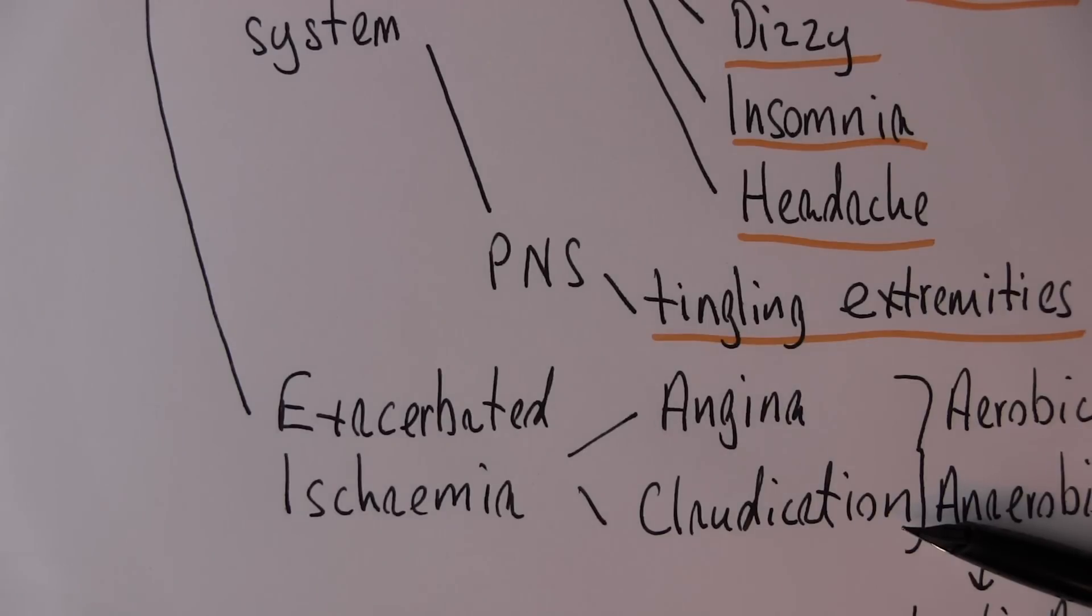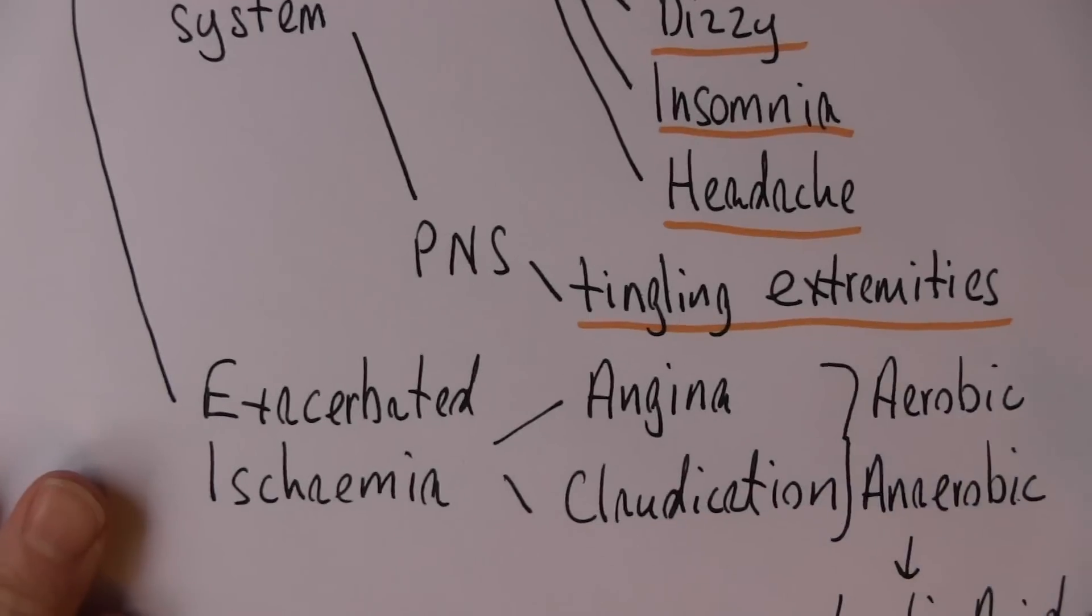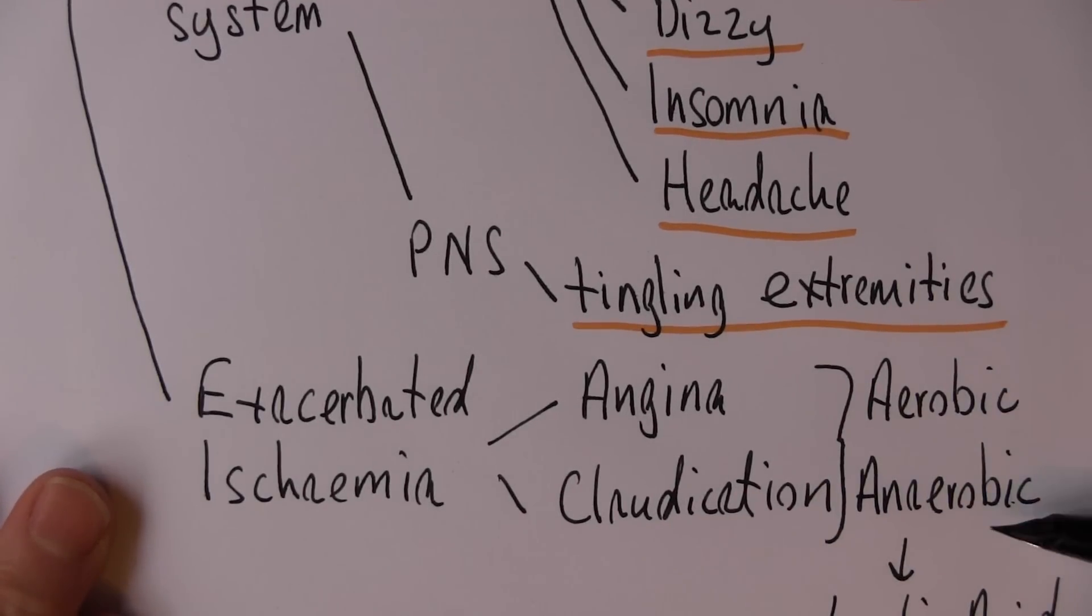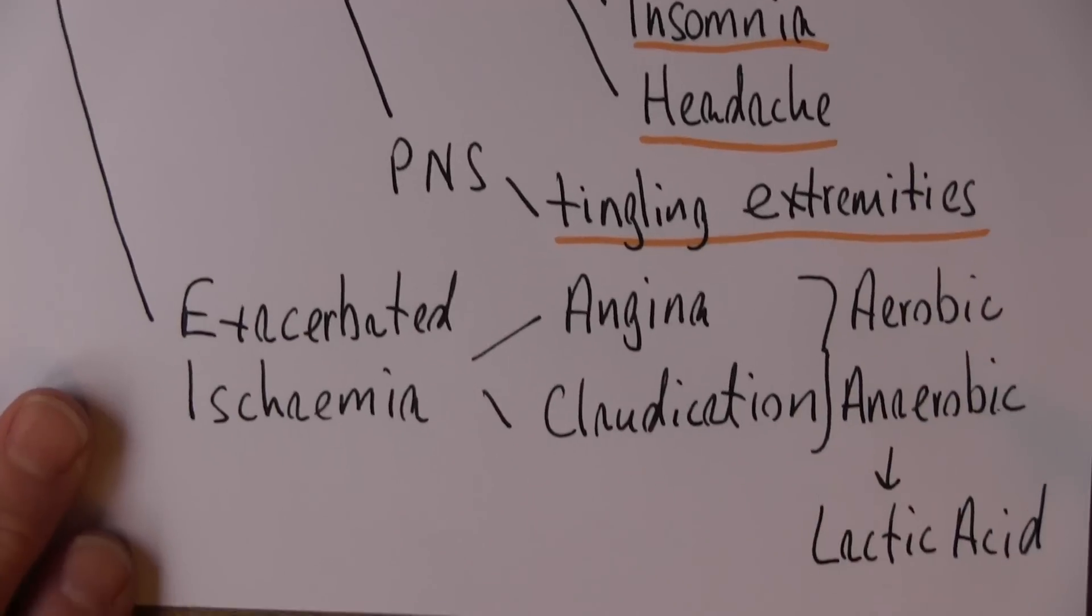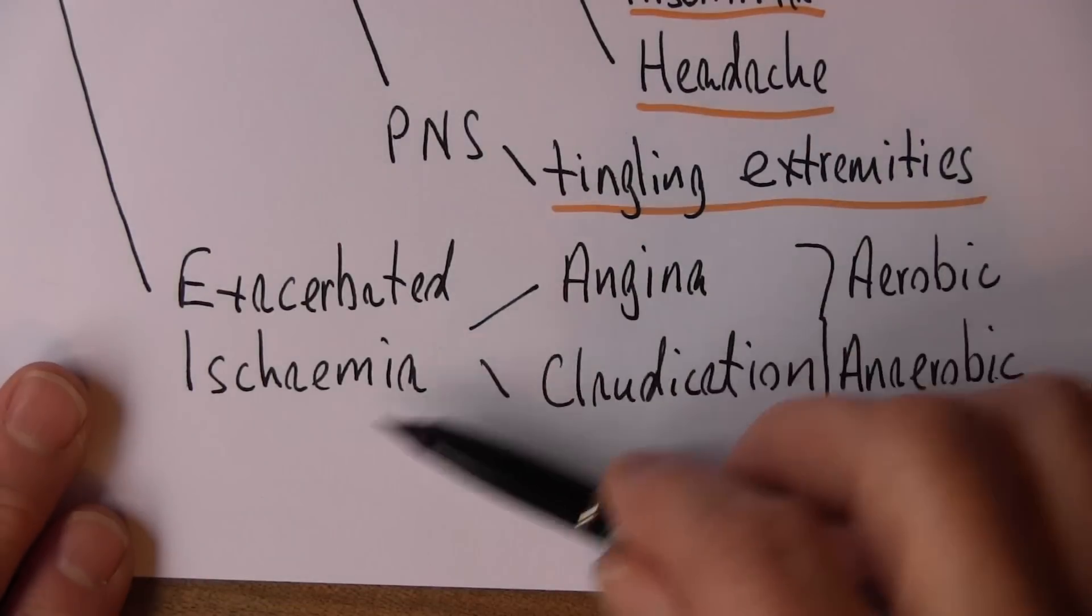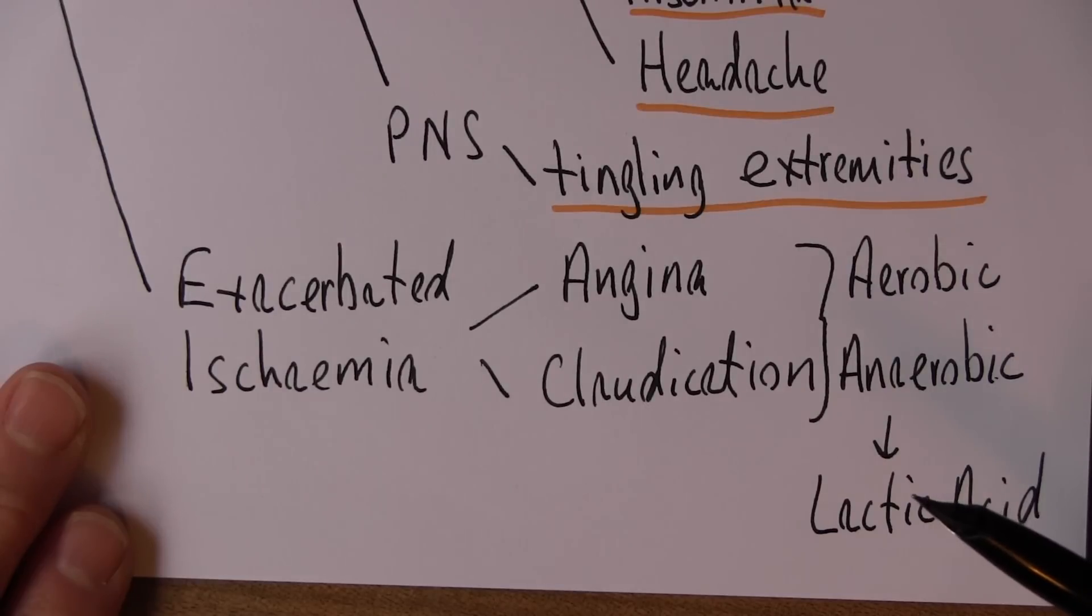But what claudication is, is ischemia and hypoxia of the leg muscles. And typically what happens is the patient starts walking. As they walk their leg muscles are using energy. The metabolism changes from aerobic to anaerobic. That causes the production of lactic acid. So they limp and then stop, and then after a period of time recover and can carry on.